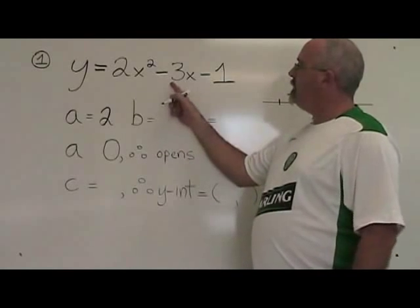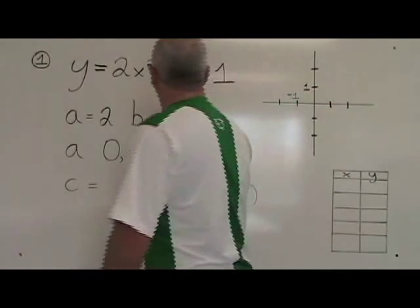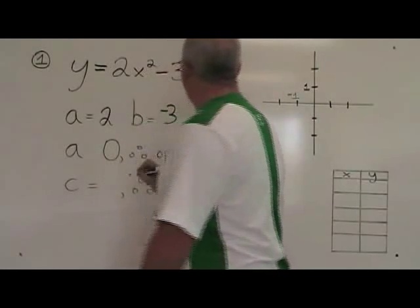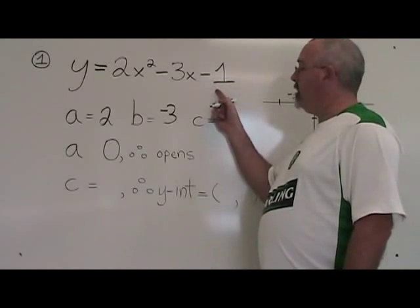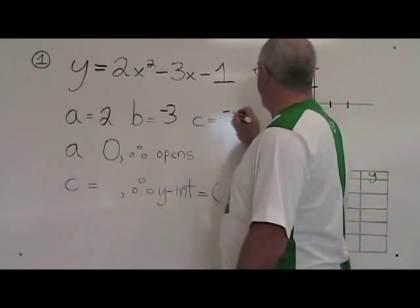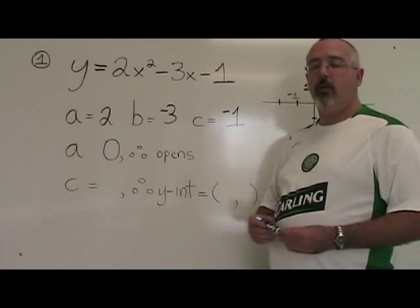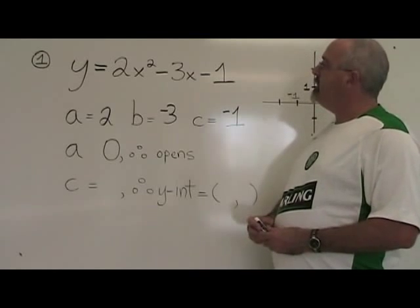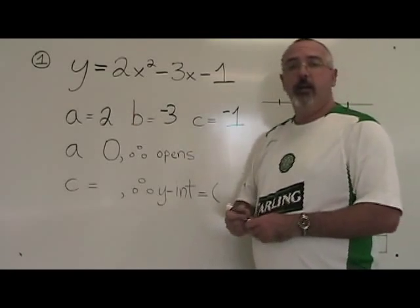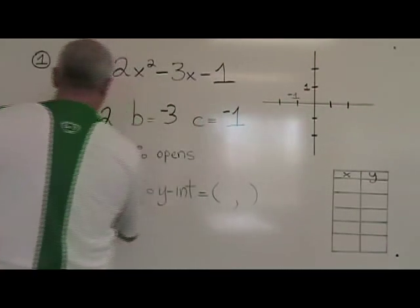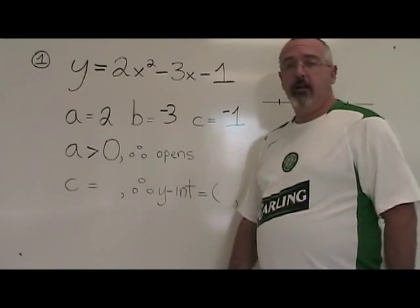b is the numerical coefficient of the second term, b equals negative 3. c is the numerical coefficient of the third term, c equals negative 1. Since a equals 2, a is positive and greater than 0, which means our parabola opens upwards.